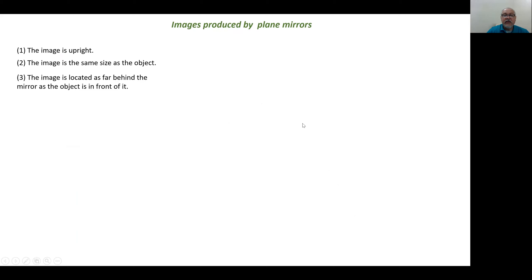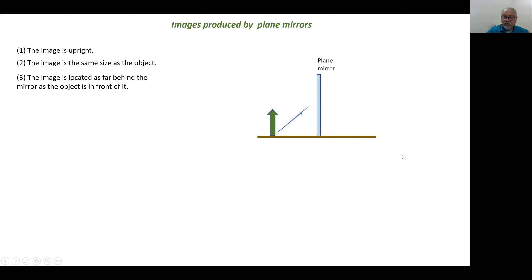Now let's go for images produced by plane mirrors. These are the statements for these images: the images are bright, the image is the same size as the object, and the image is located as far behind the mirror as the object is in front of it. We have the mirror, an object, and light coming from the object goes to an observer. The object has height HO.